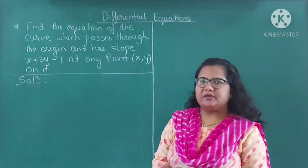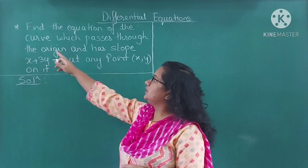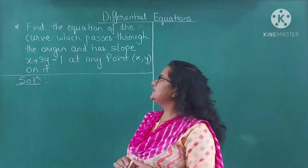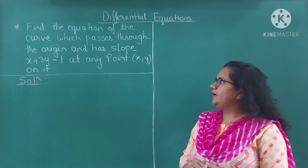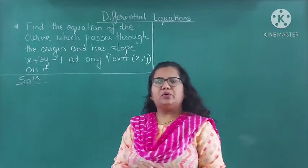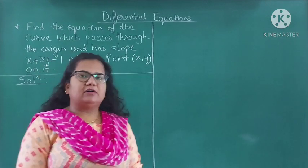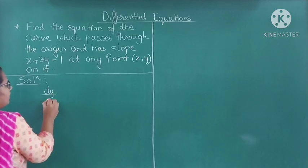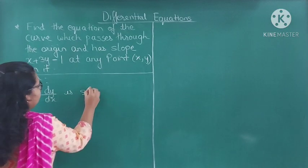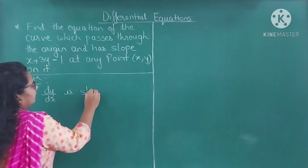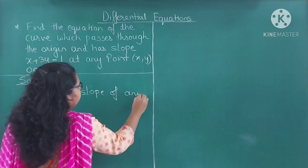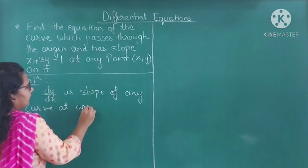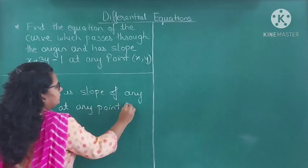Let us see our first example. Find the equation of the curve which passes through the origin and has slope x plus 3y minus 1 at any point (x, y). The slope of any curve is dy/dx. So dy/dx is the slope of any curve at any point (x, y).